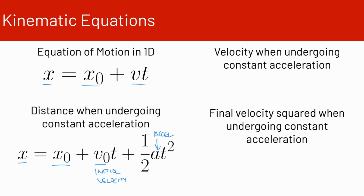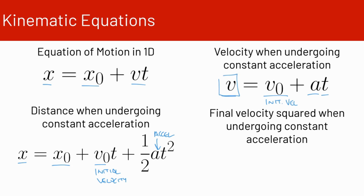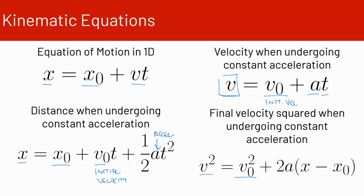The next kinematic equation is velocity when undergoing constant acceleration: v equals v-naught plus acceleration times time. So given initial velocity, acceleration, and duration, that gives us final velocity. Finally, we have final velocity squared when undergoing constant acceleration: v squared equals v-naught squared plus 2 times acceleration times displacement.